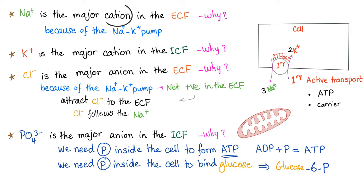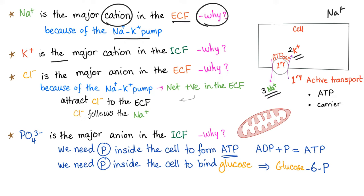Sodium is the major cation in the extracellular fluid. Why? Because of the sodium-potassium pump, which pumps three sodium outside the cell and two potassium into the cell. Potassium is the major cation in the intracellular fluid for the same reason.